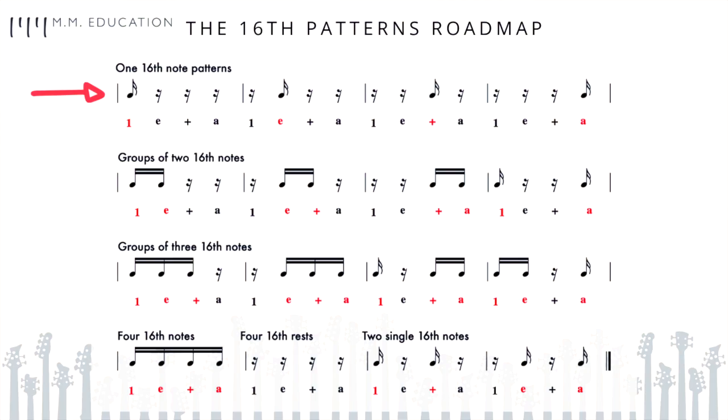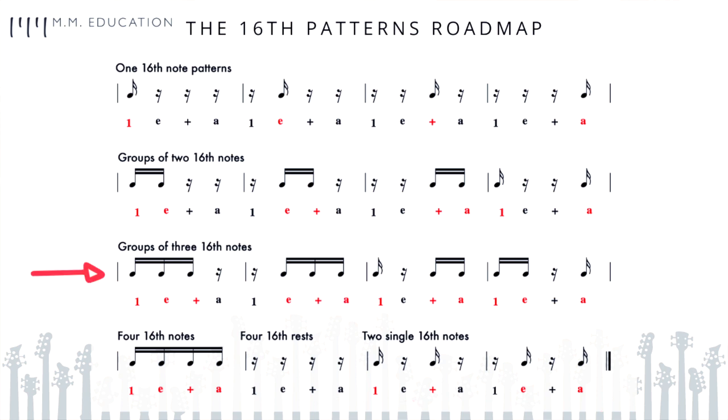Here is the sixteenth-note pattern map. As you can see, there are four one-sixteenth-note patterns, six two-sixteenth-note patterns, four three-sixteenth-note patterns, one with all four notes, and one with zero notes. To make sure you can play all of these patterns equally well, go through all of them one by one at a moderate tempo.